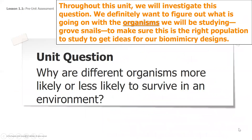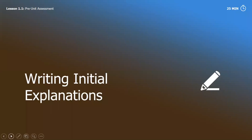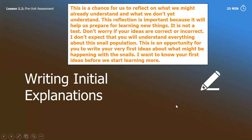This is our unit question — just like in the classroom, we always have this up. Throughout this unit we are going to be investigating: why are different organisms more likely or less likely to survive in an environment? When we talk about snails, we are talking about their specific environment — not an ocean or arctic animal. Our chapter one question is: why are the snails with yellow shells not surviving well? We're going to be focusing on this question this week and next week.